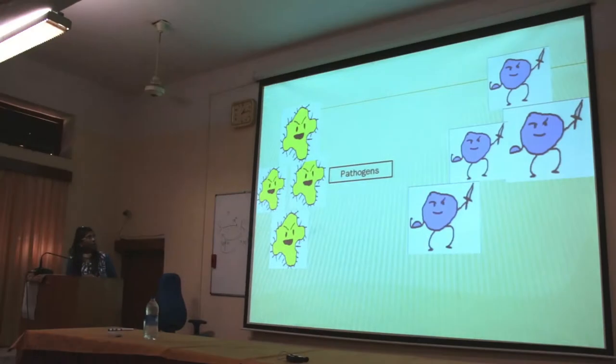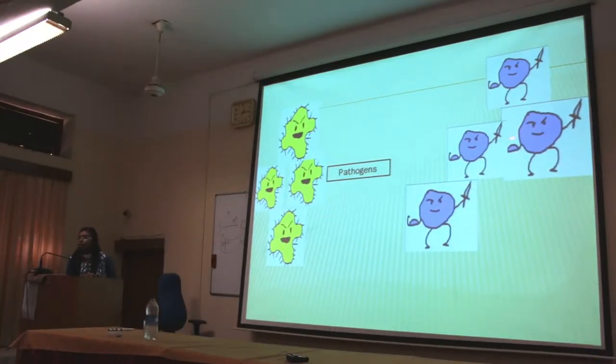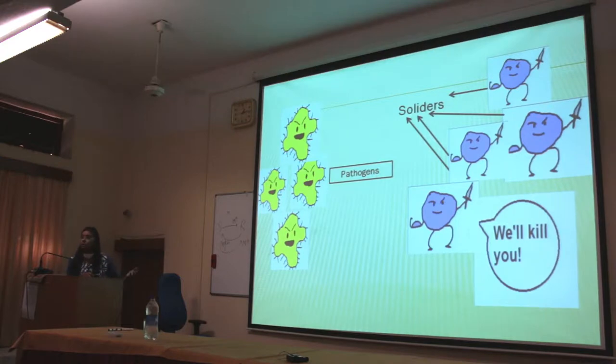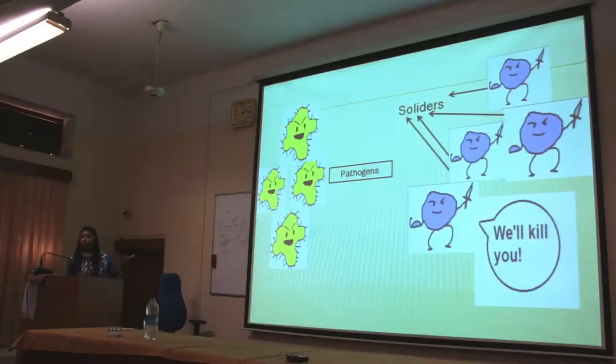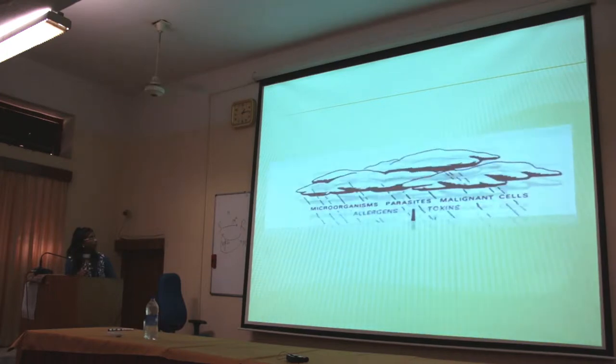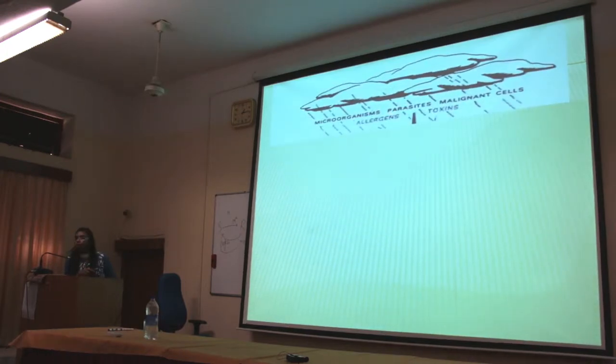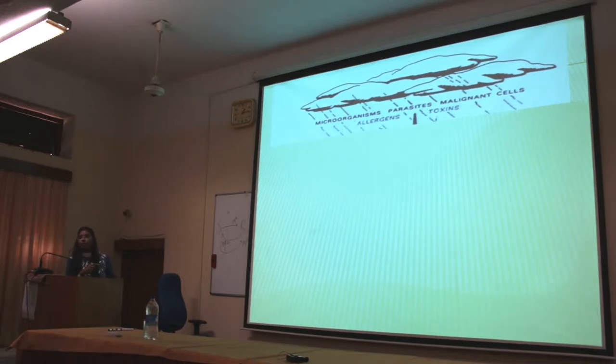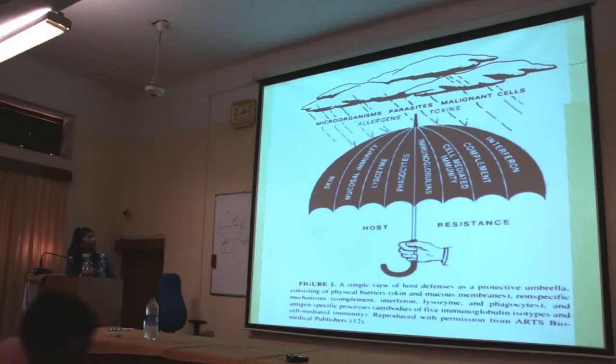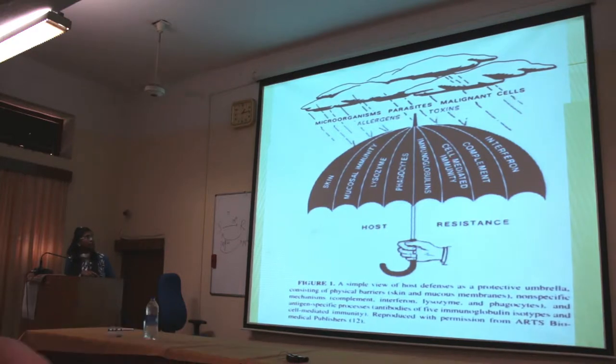If a pathogen is entering your body, what does the immune system do? The different components of the immune system are actually ready with tools and techniques and they are going to eliminate it, making you healthy. These several forms of pathogens can enter your body and may be harmful. The system — including skin, mucosal immunity, lysosomes, phagocytes, immunoglobulin, cell-mediated immunity, complement system, and interferons — acts at several stages against pathogens to provide immunity.